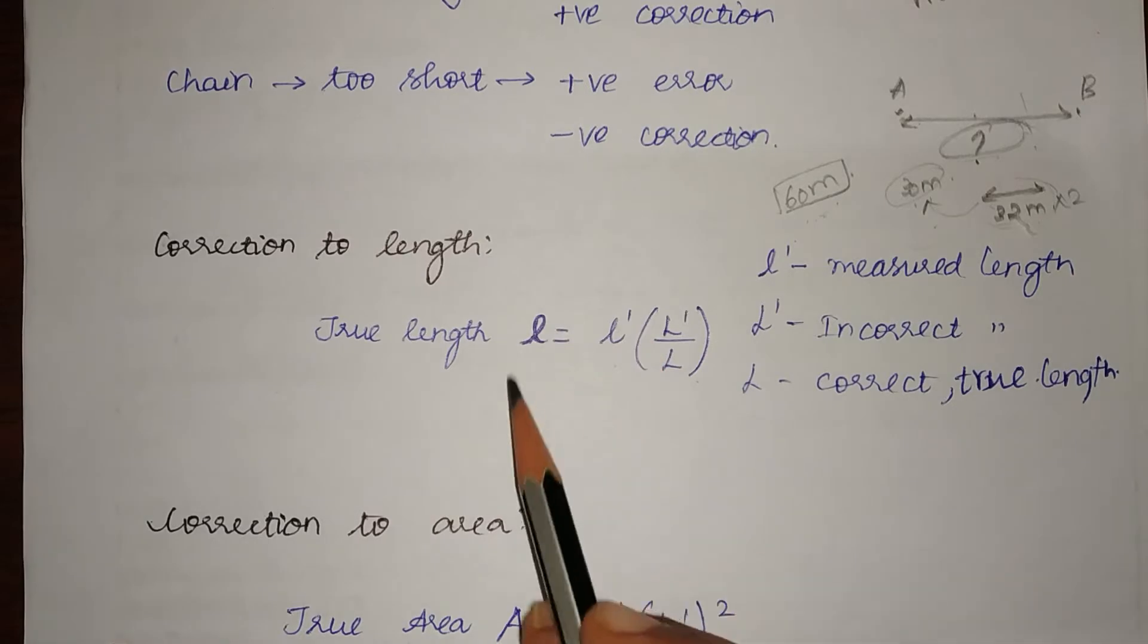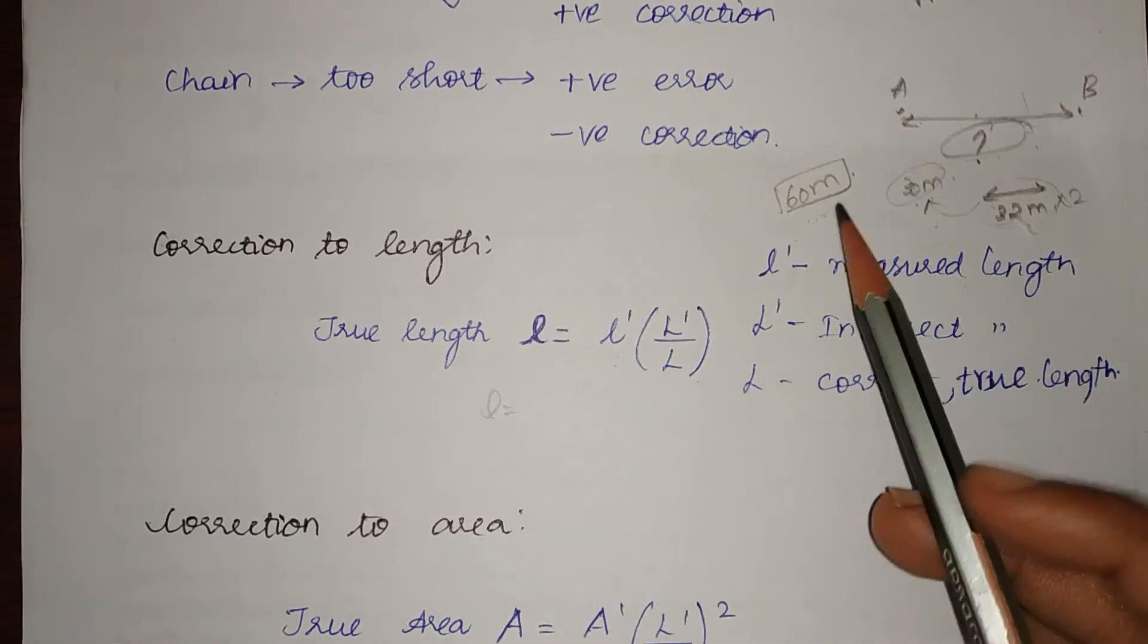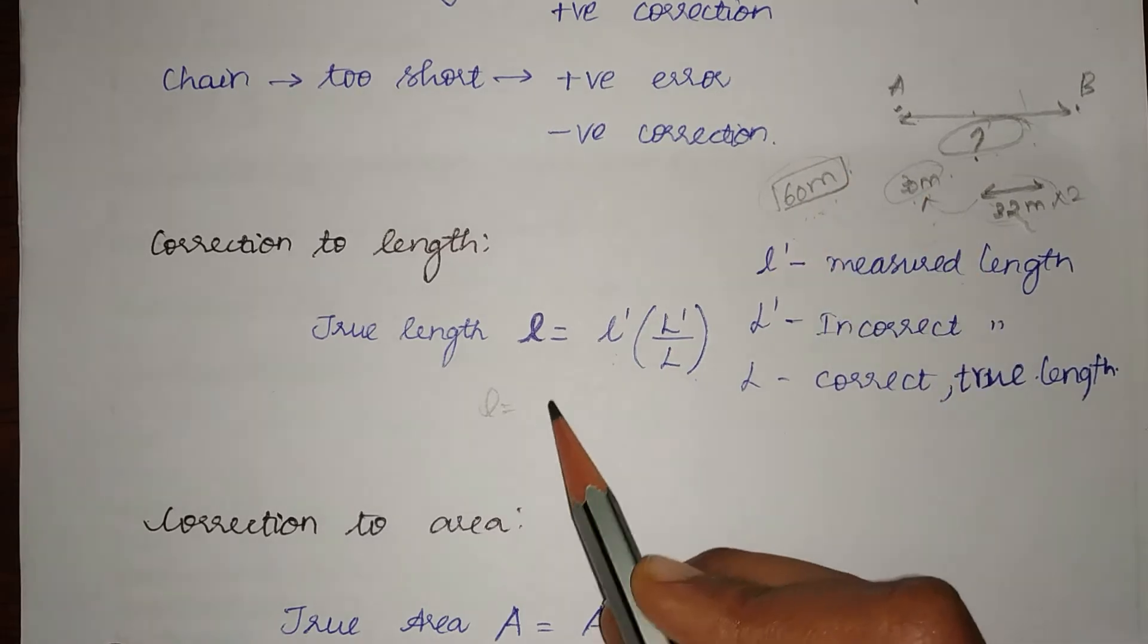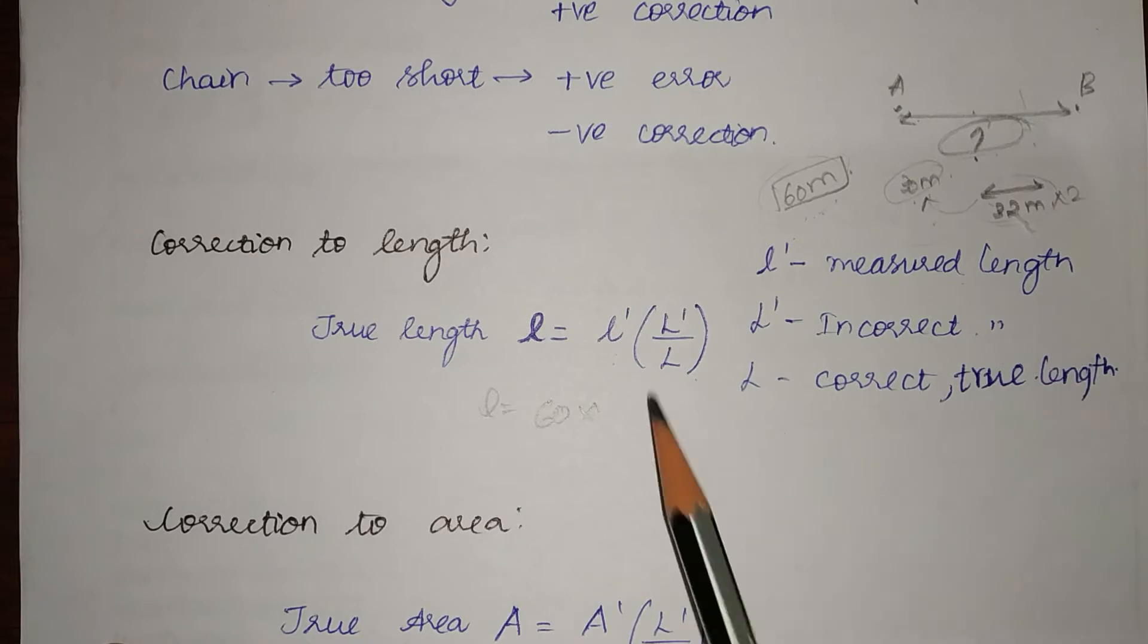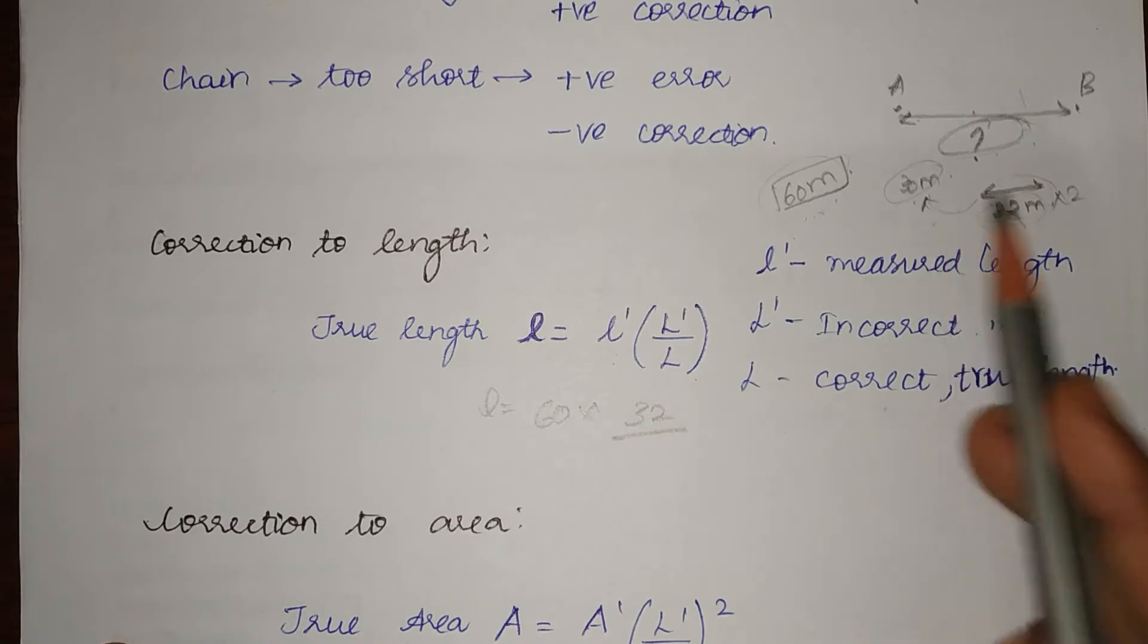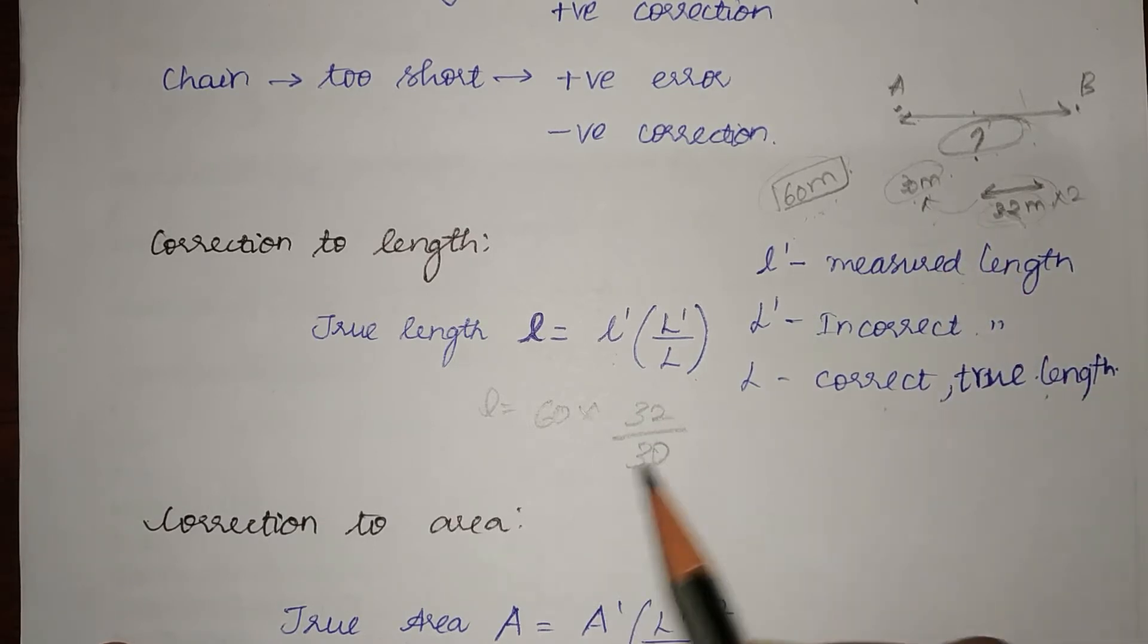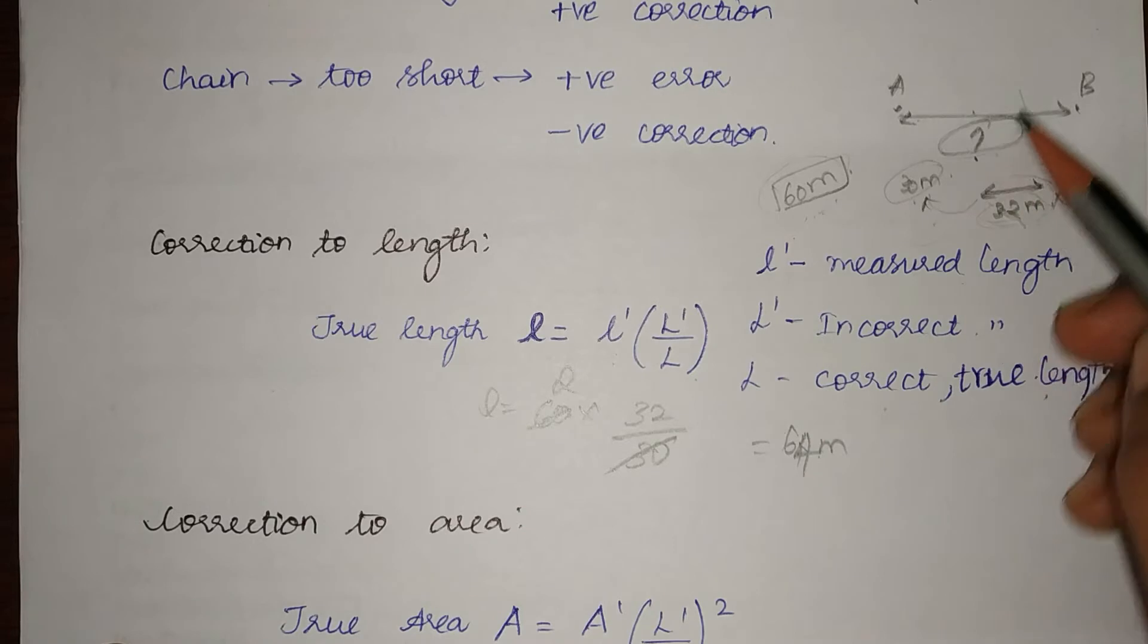So the true length L equals L′ which is the measured length. I have measured the length of 60 meters. So 60 times L′ which is incorrect length. The incorrect length is 32 meters divided by the correct length which is 30 meters. So I will get the answer as 64 meters.